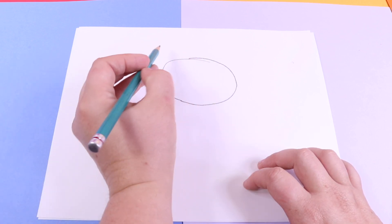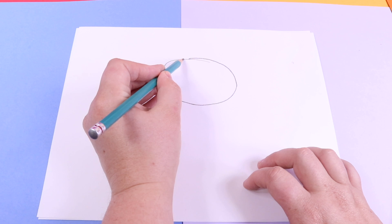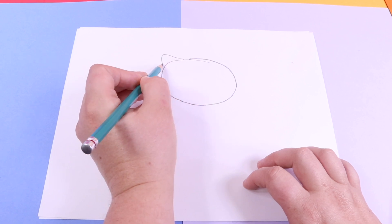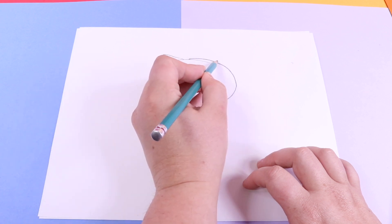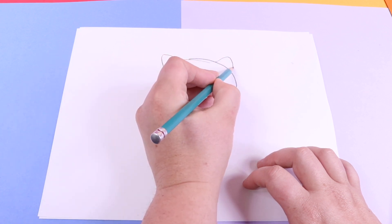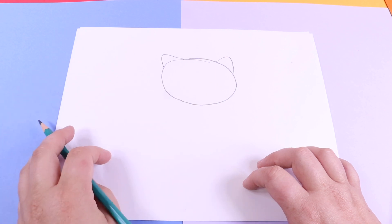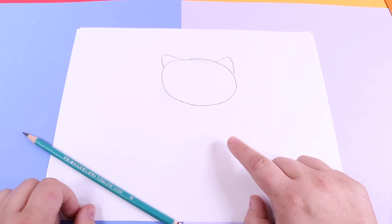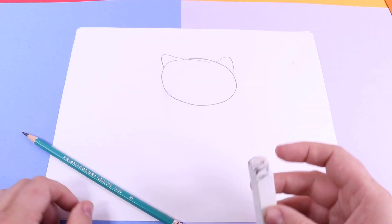Now, attaching to the corners of the top of the oval, we're going to add some cute little ears. You will make your circle very lightly, but so you can see it, I make mine really dark.